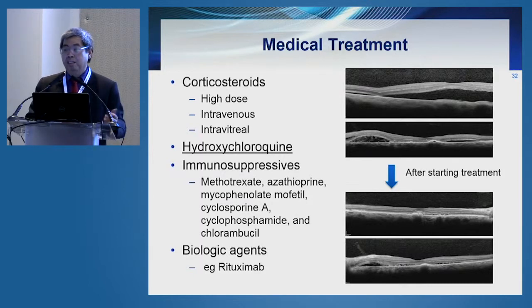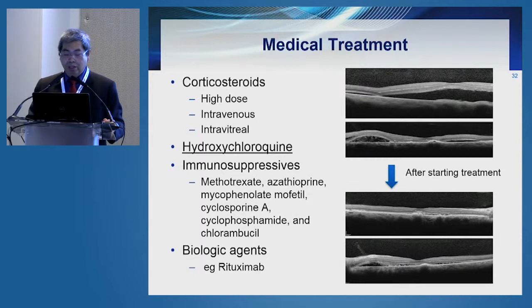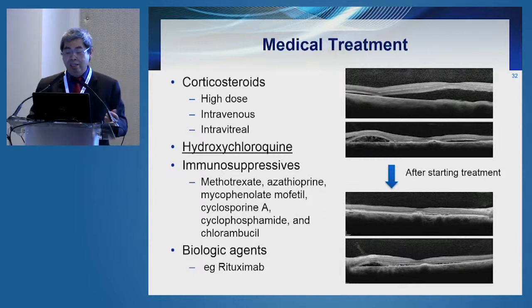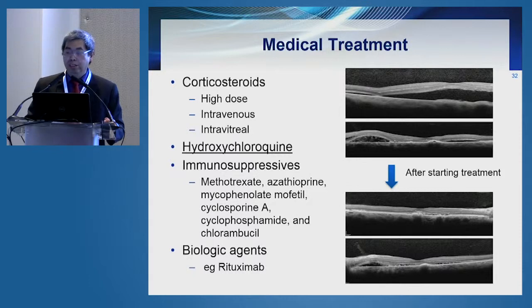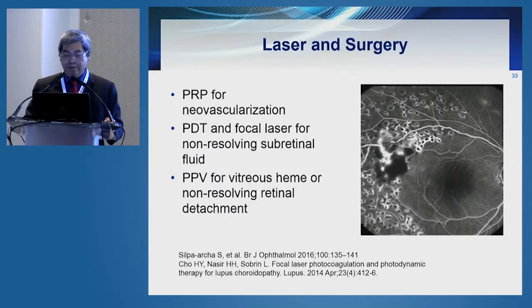As the disease gets controlled, rheumatologists like to put patients on hydroxychloroquine treatment. The use of immunosuppressives can be added on to steroids or used as a steroid-sparing regimen. Biologic agents such as rituximab have also been shown to be useful for treating the posterior segment lesions of lupus.